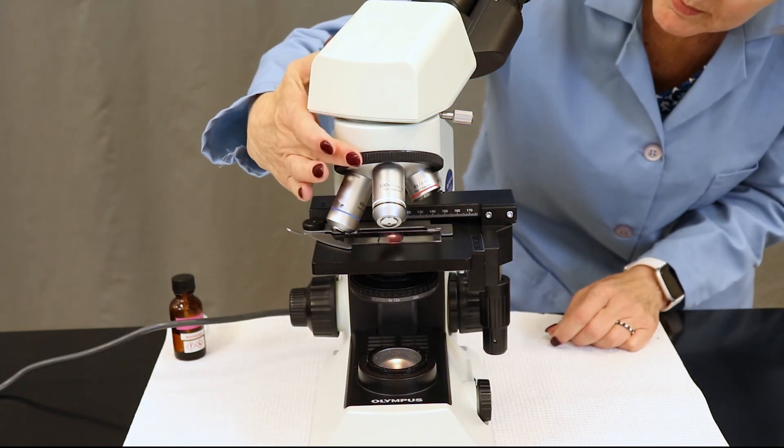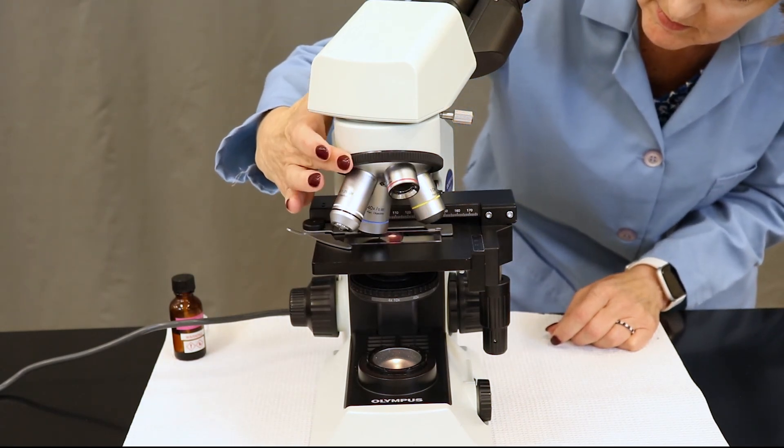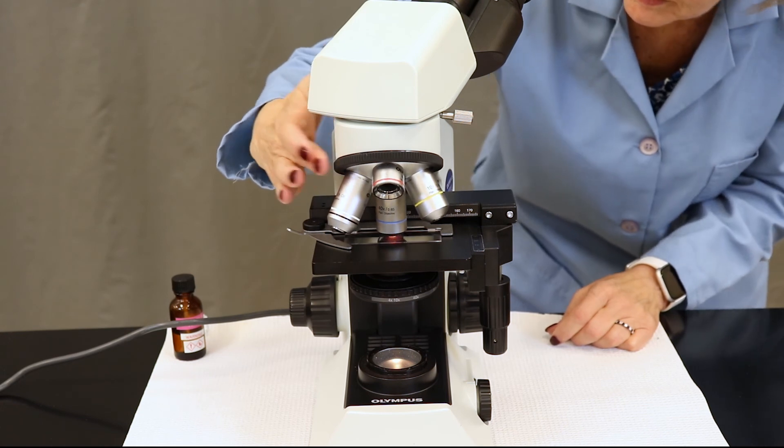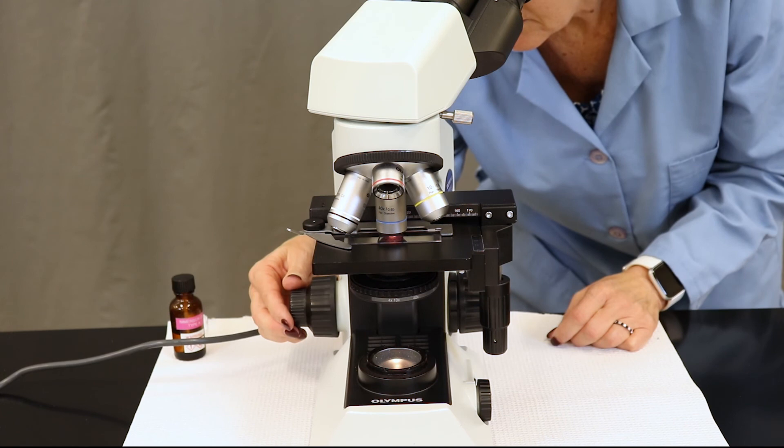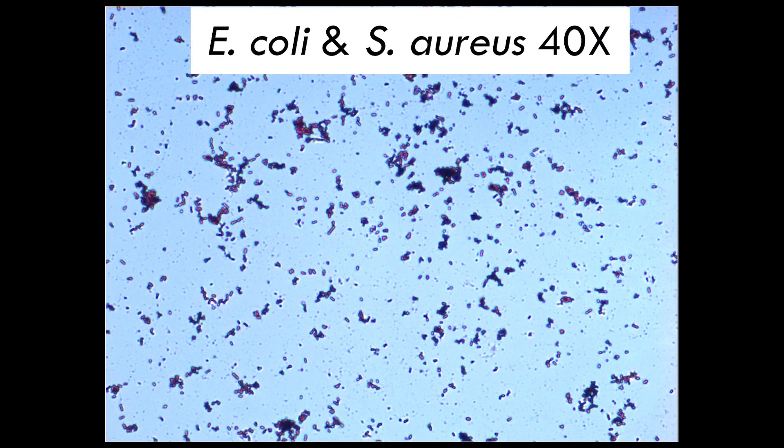Once you see color, use the nose piece and move up to 40x. Here's where you can begin to work with the fine focus knob or the small knob located on the side of the microscope. Adjust in one direction, ideally until coloration becomes clear.